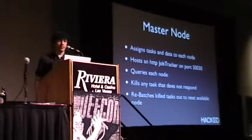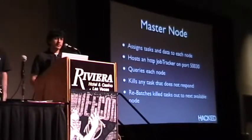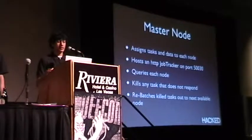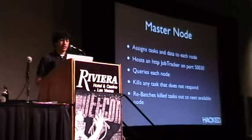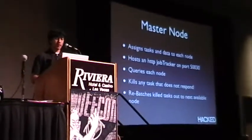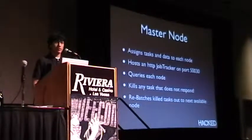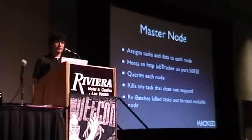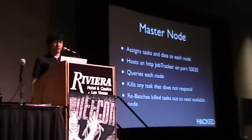When you run a job in Hadoop, you basically upload your job to a master node. This master node keeps track of all the nodes in the cluster and assigns tasks and data to each node. It also hosts the HTTP job tracker so you can follow your job, watch the progress, and view previous jobs. It also queries each node and kills any task that does not respond, and rebatches that killed task to the next available node.